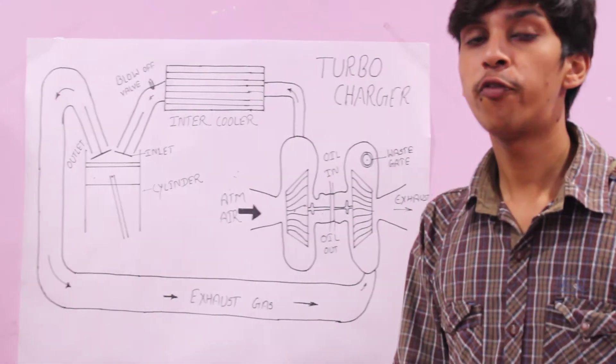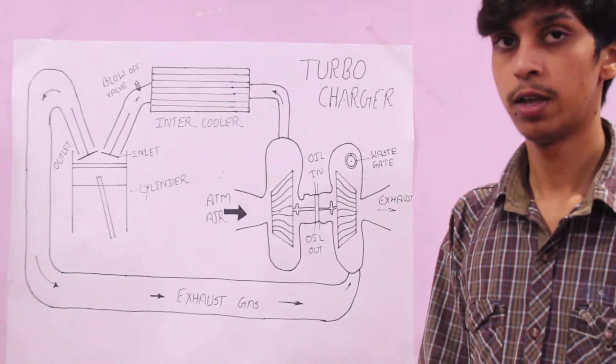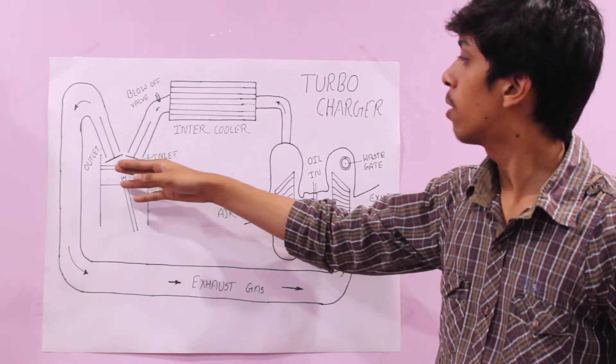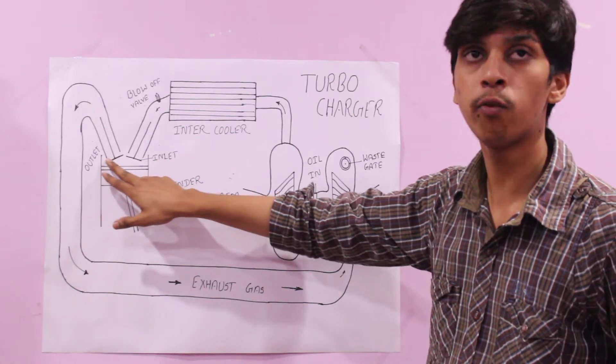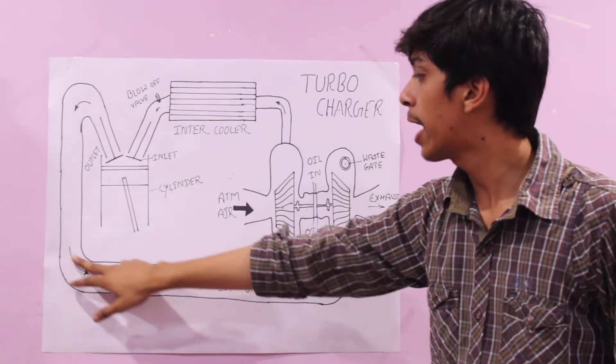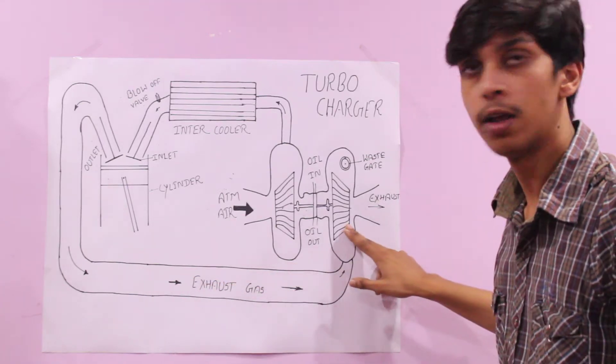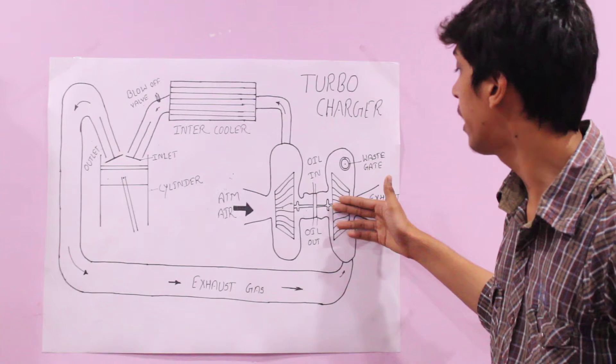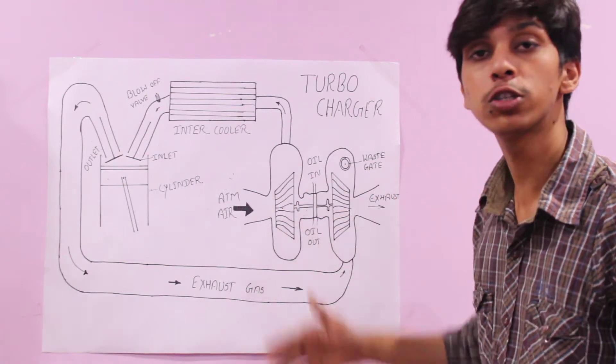We all know about the fourth stroke of an engine. In the fourth stroke of the engine, the exhaust gas is extracted from the outlet valve. This exhaust gas goes to the turbine and the turbine starts spinning. When the turbine is spinning, due to the coupling, the compressor also starts spinning.